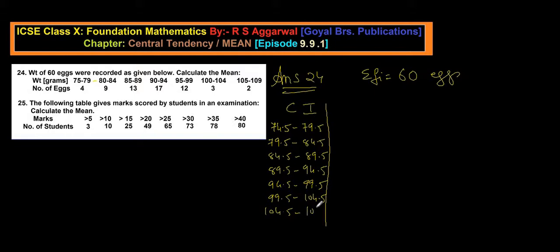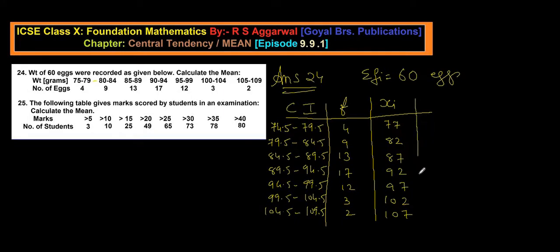And we write here frequency. Frequency is given as what. Here 4, 9, 13, 17, 12, 3, and 2. So this is the frequency given. What do I require? I require class marks. So class marks xi, 74.5 plus 79.5 divided by 2, you get 77, 77, 82, 87, 92, 97, 102, and 107. So these are the class marks.